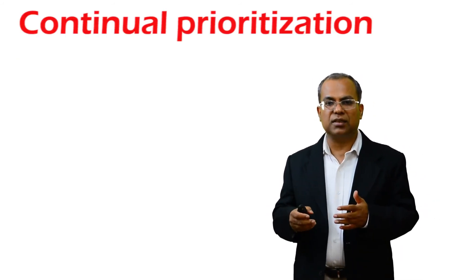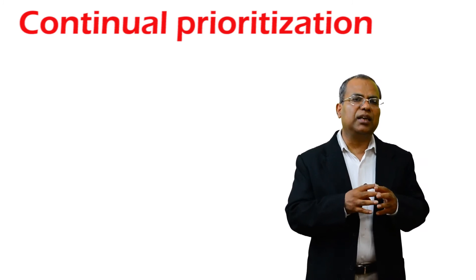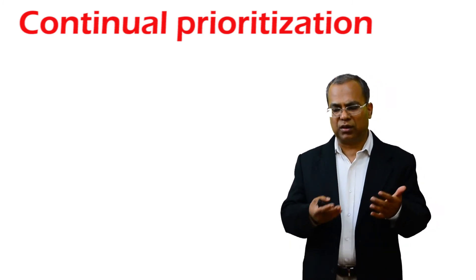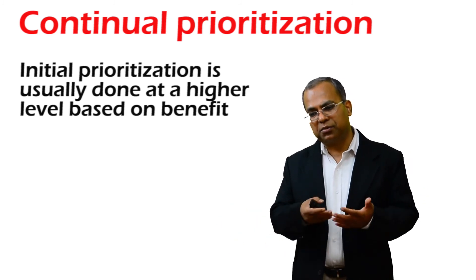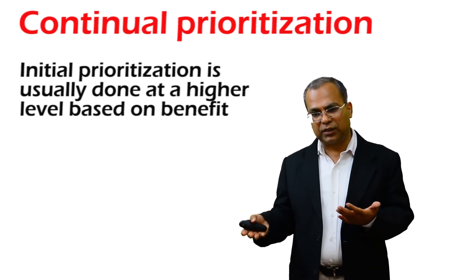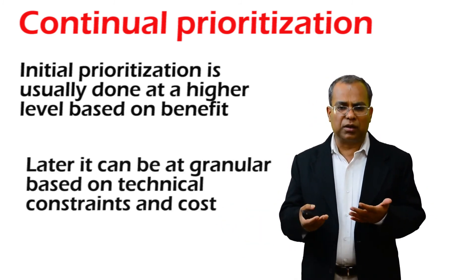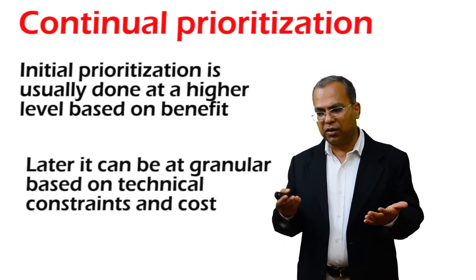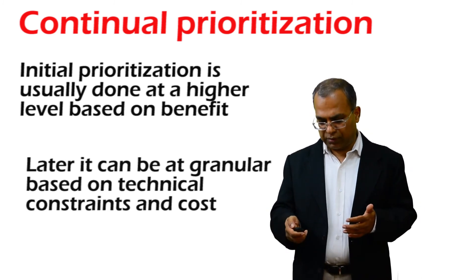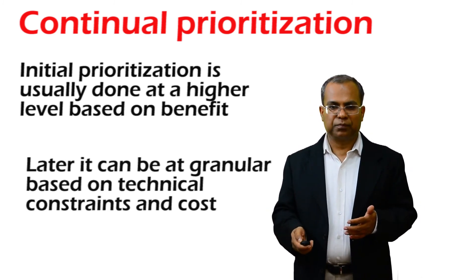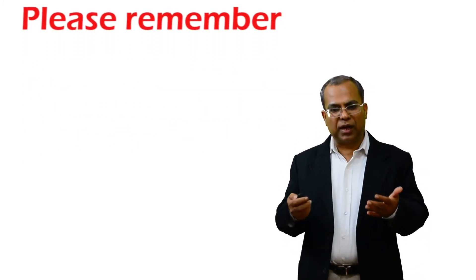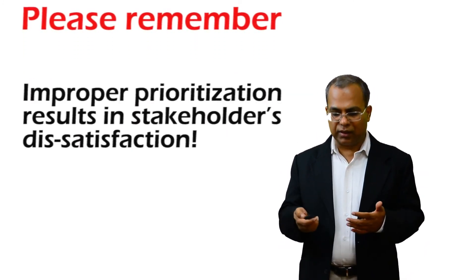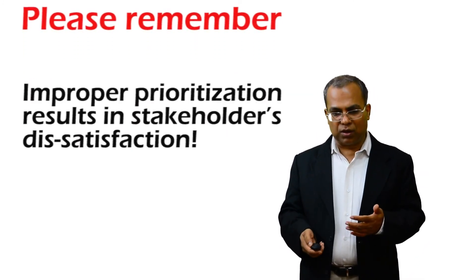The third element is continual prioritization, which means that typically in the beginning we may have done prioritization in a particular way, and that can change as we go ahead in the project. We could look at a more granular basis, such as technical constraints and cost as we move forward. Please remember, a bad prioritization will obviously result in stakeholder dissatisfaction.